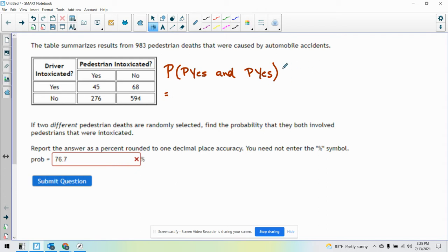So we have a formula for this. This is the probability, I'll say pedestrian one and pedestrian two.